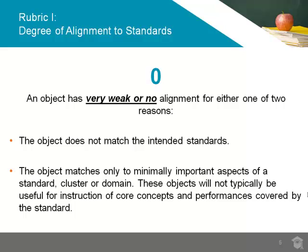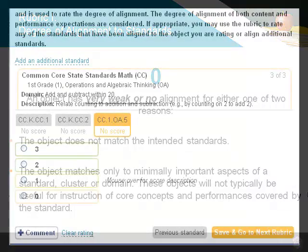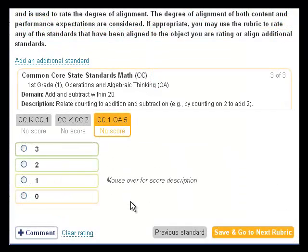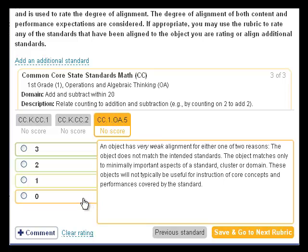An object has very weak or no alignment to a standard — a 0 rating — for one of two reasons: either the object does not match the intended standard, which would apply if someone else aligned a standard to an object and you disagreed with them, or if the object matches minimally to an important aspect of the standard.